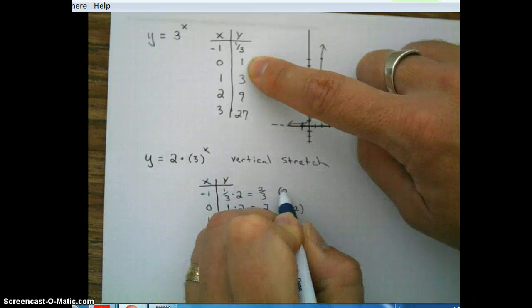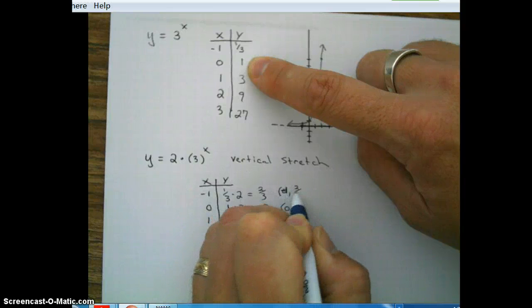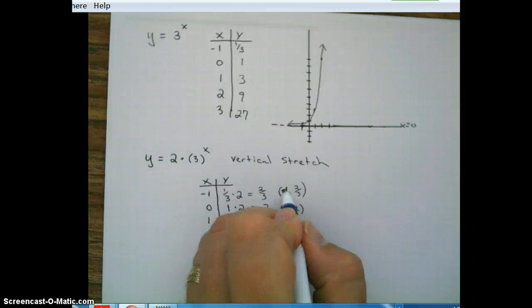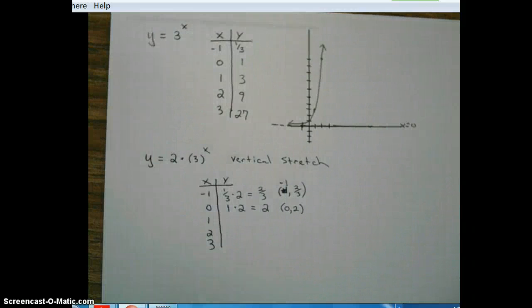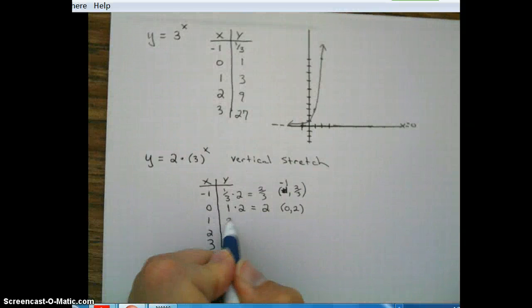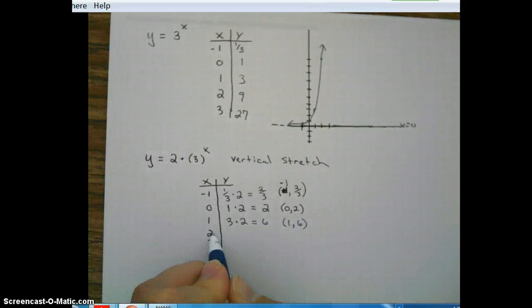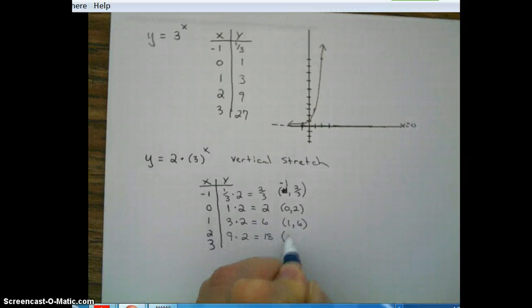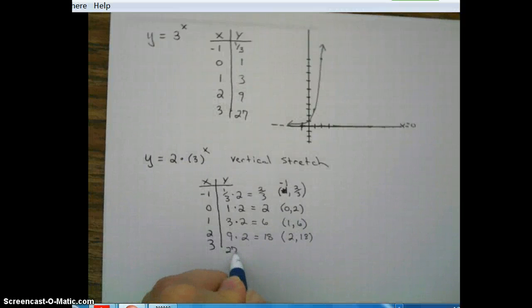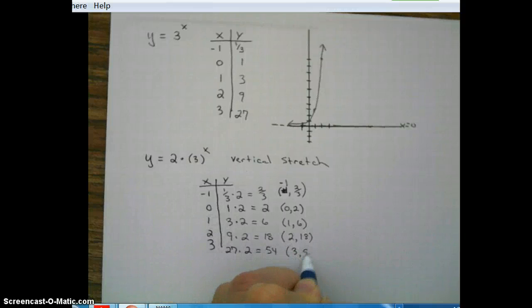Oops, sorry about that. Negative 1, 2 thirds. That's a negative 1. Let me write it above. Okay, for 1, we had gotten a 3. 3 times 2 is 6. So our new coordinate is 1, 6. And then for 2, we got 9. And then for 3, we had gotten 27.